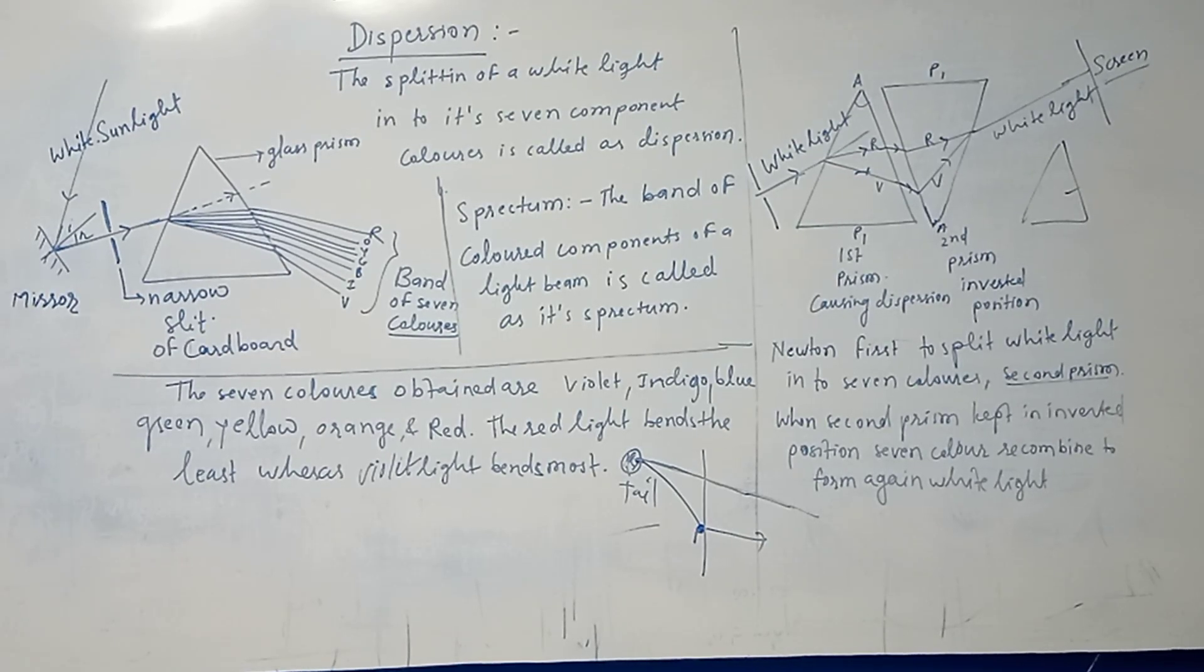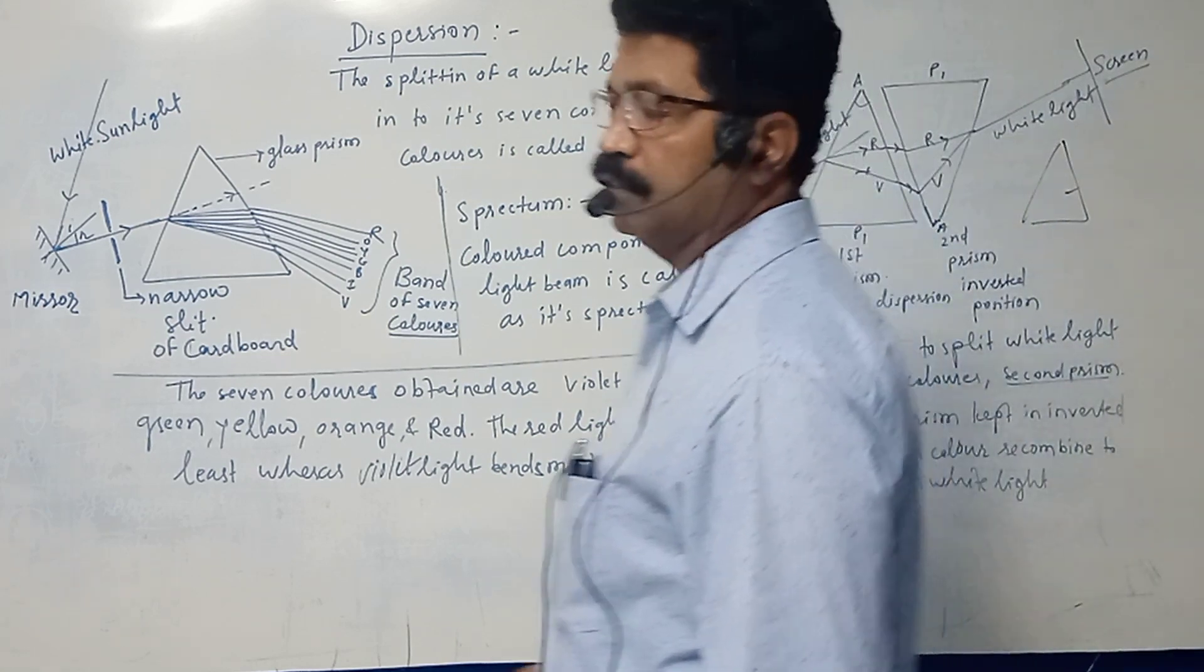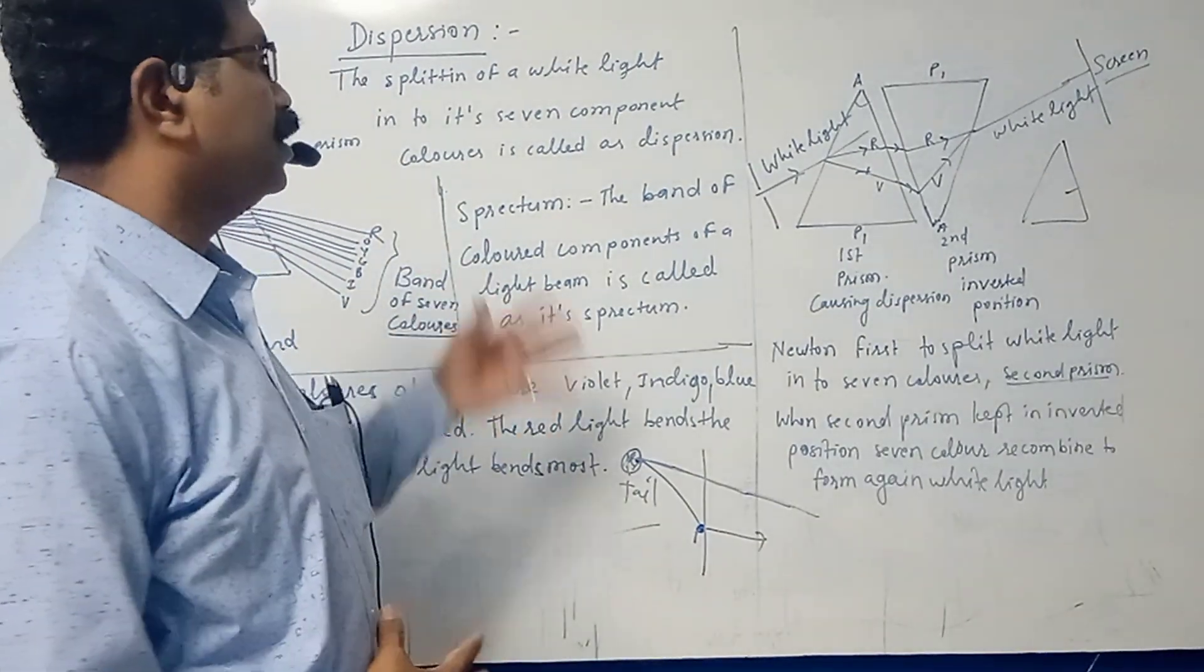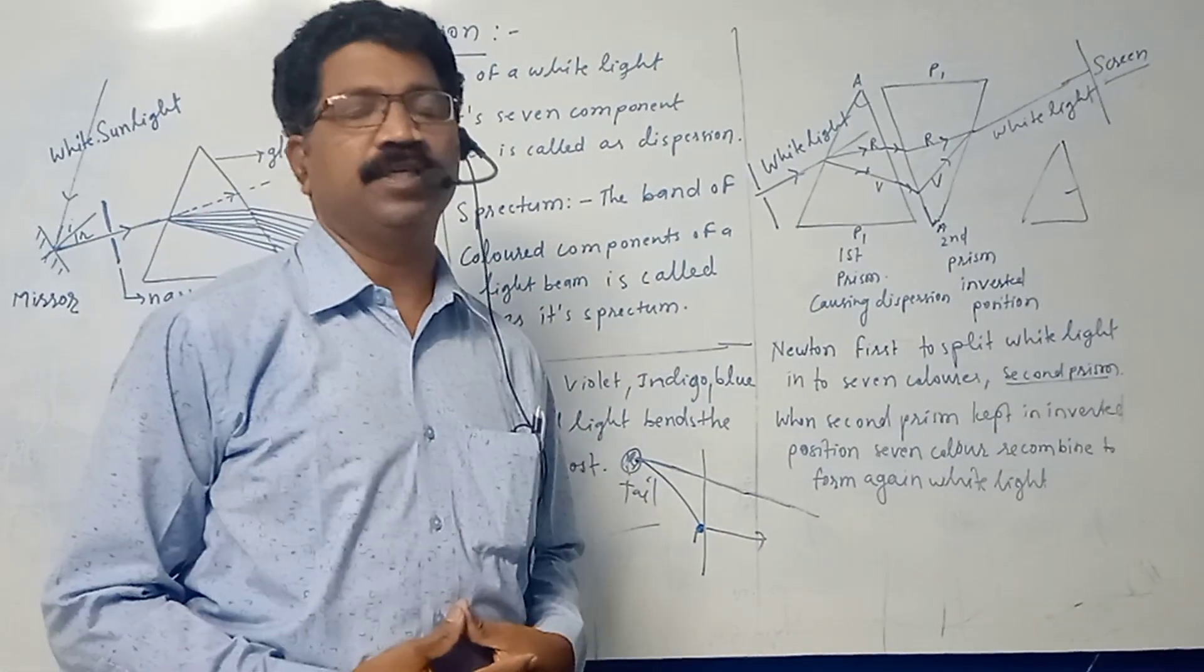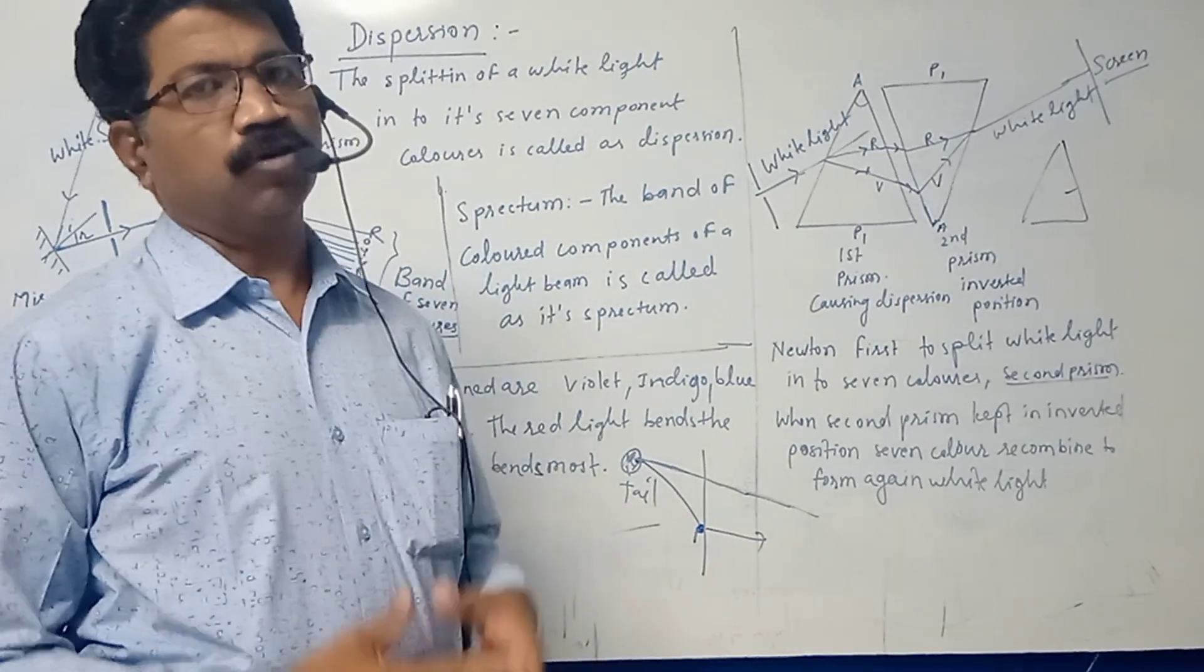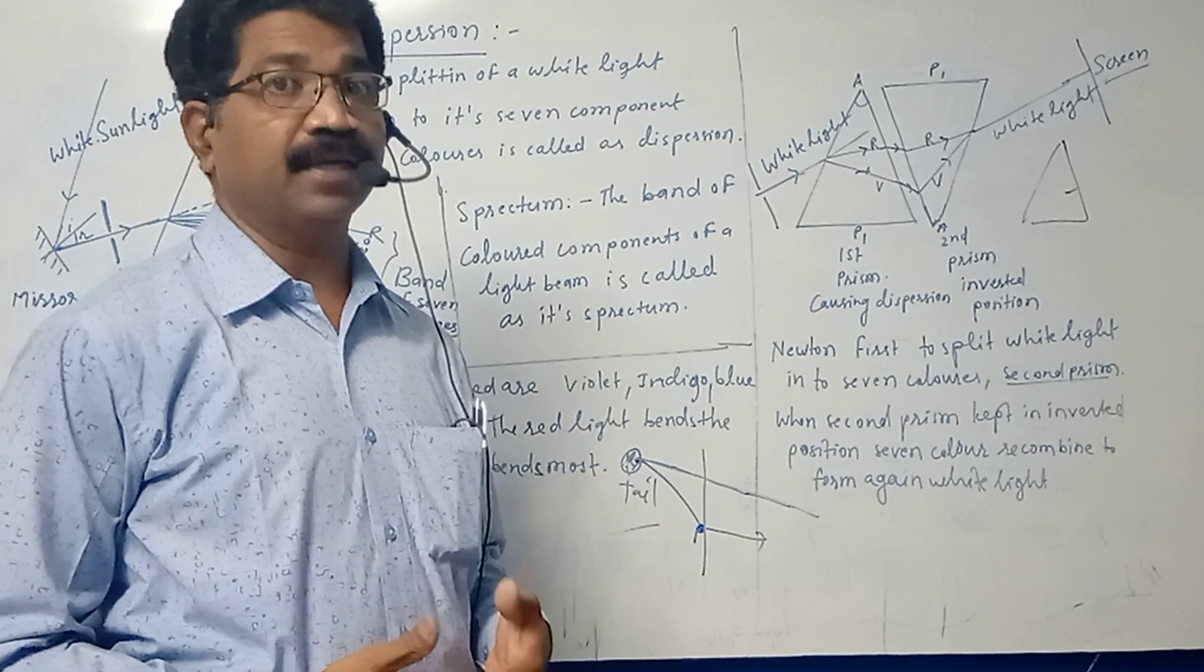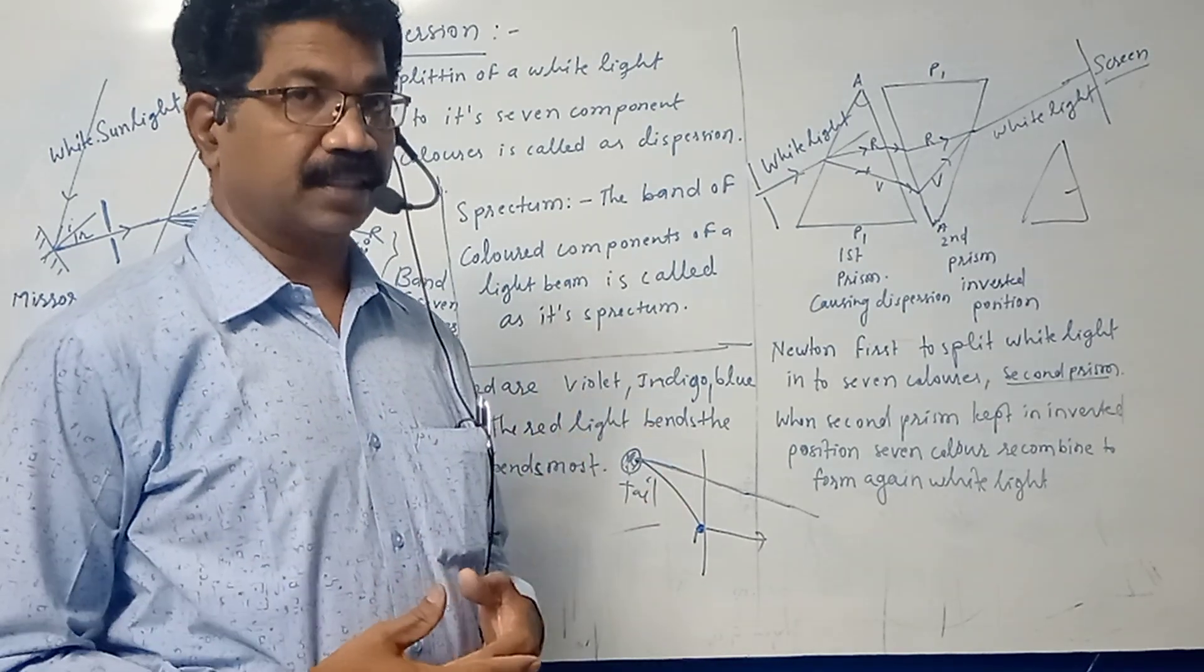Good morning students. Have you understood the dispersion of light? The splitting of white light into its seven component colors is called dispersion. The band of colored components of a light beam is called its spectrum. When light passes through different components, it splits up into different colors, and that set of colors is called the spectrum.